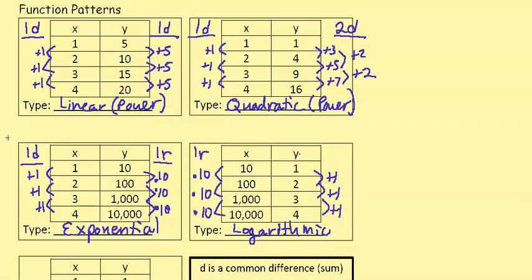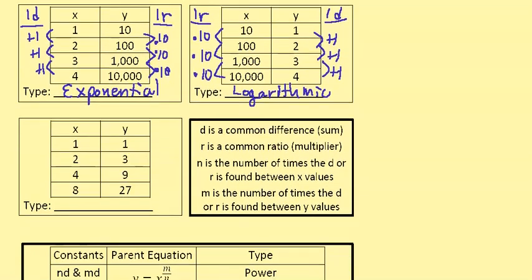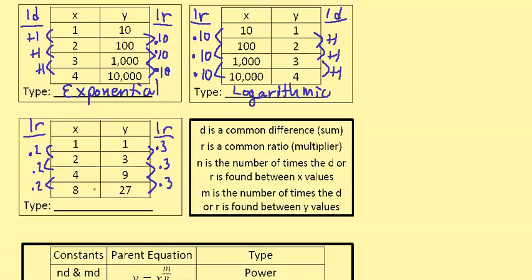So for the logarithmic case, we have a first common ratio for inputs and a first common difference for outputs. For the last case, the x-values multiply by 2's and the y-values multiply by 3's — so both have a first common ratio. There isn't really a standard name for this type, and you'll most likely never see it — we can call it a logarithmic exponent.